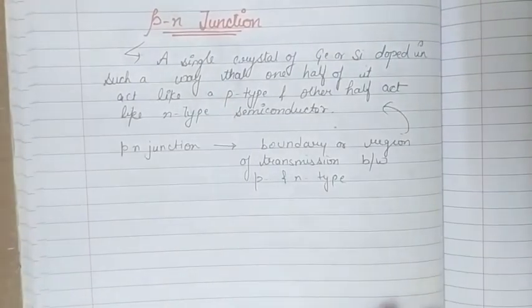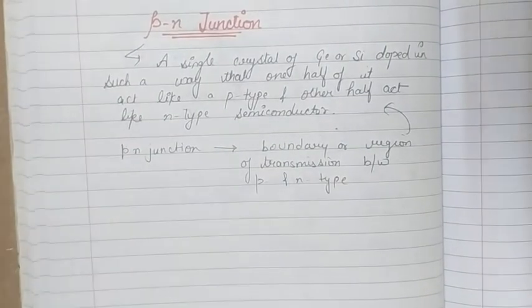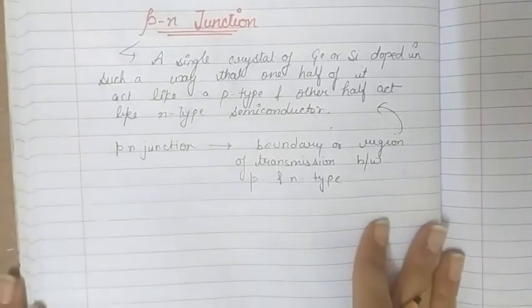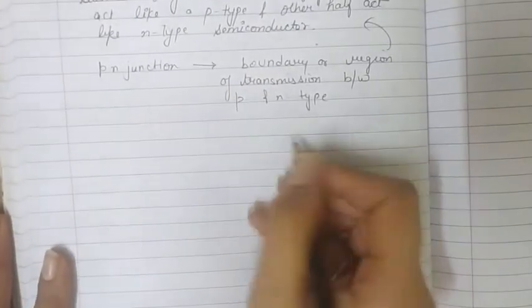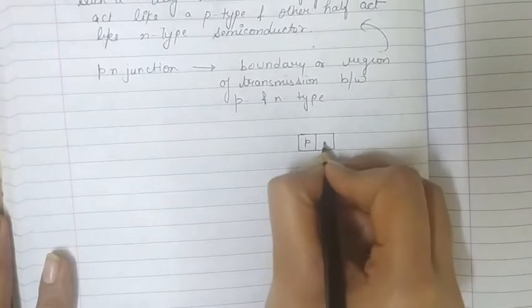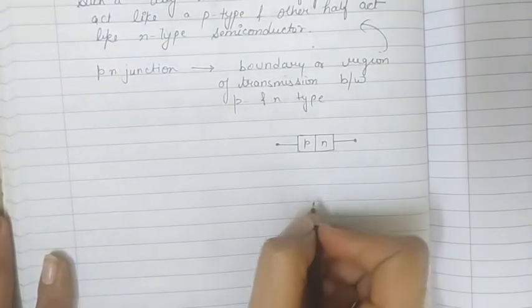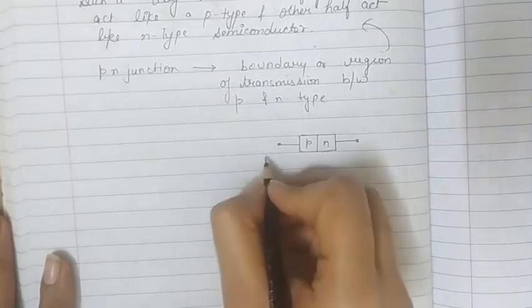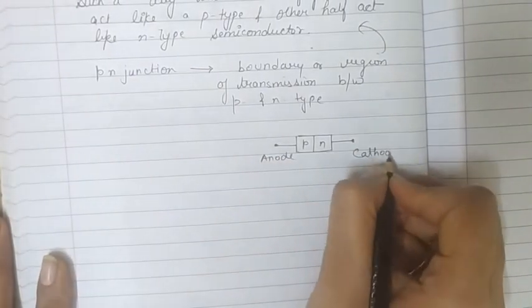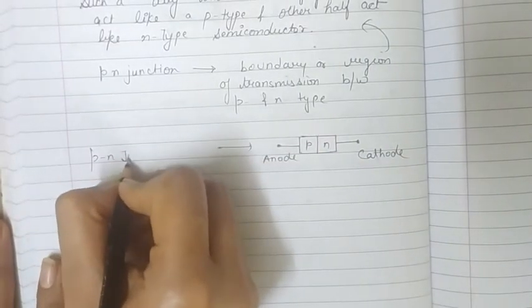If such a crystal has two electrodes connected to it — for example, one on the p-side and one on the n-side — with an anode and a cathode, then such a device is called a PN junction diode.